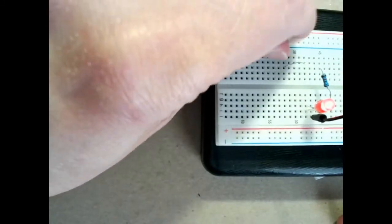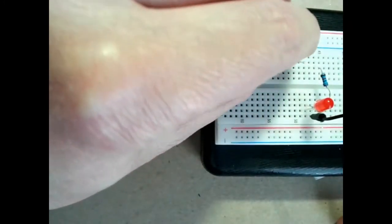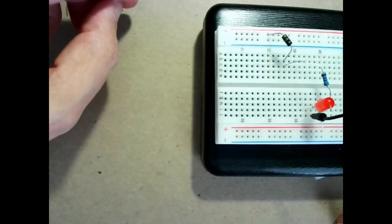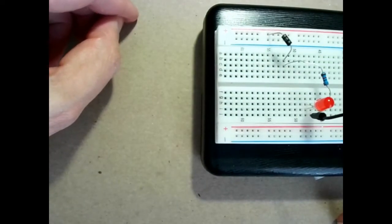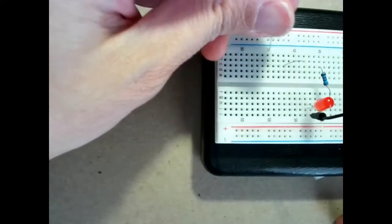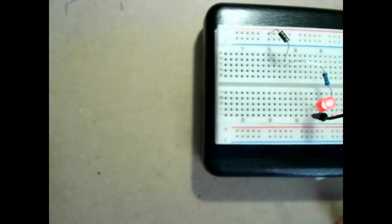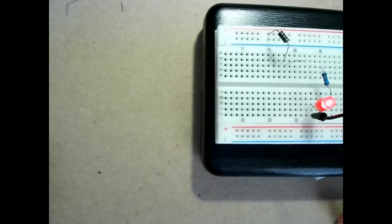If I reverse it, current doesn't flow. So it allows current to flow only in one direction. If you connect it backwards, current doesn't flow.